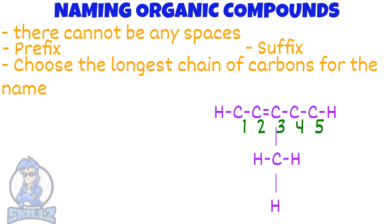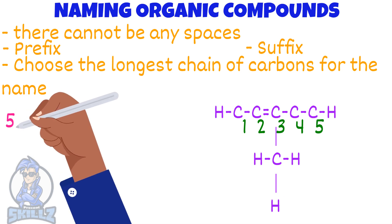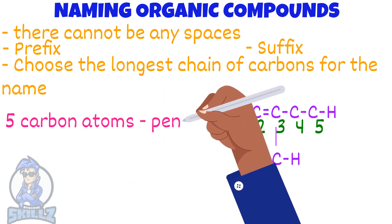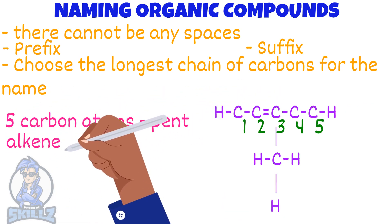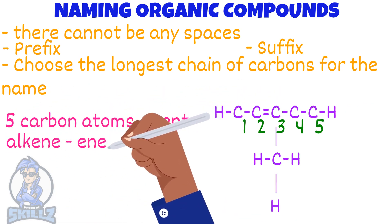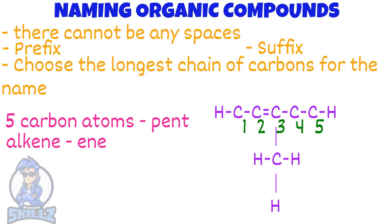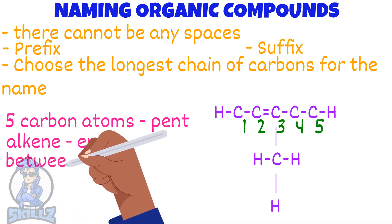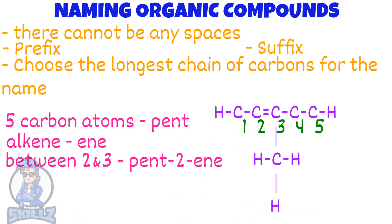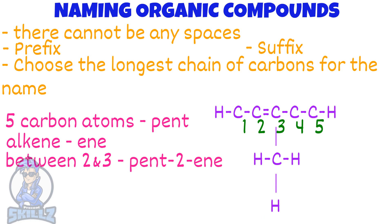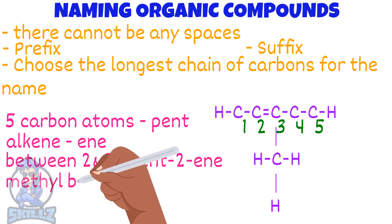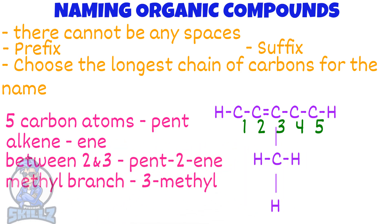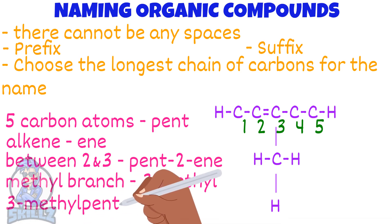Now that we know how to find the numbers, how do we write this as a name? Let's break it down: 5 carbon atoms, so 'pent'. Double bond, so alkene, so 'ene'. Double bond between 2 and 3, so we add it as 'pent-2-en'. Then the methyl branch from the third, so '3-methyl'. The final answer is 3-methyl-pent-2-ene.